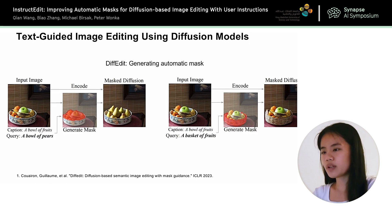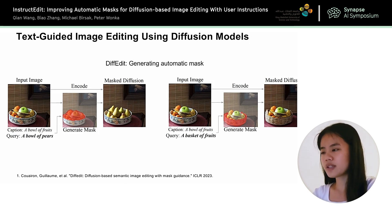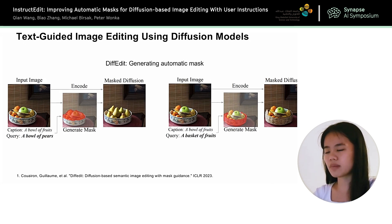If we want to give more controllability to the editing, we can add a mask into the editing pipeline. For the work DiffEdit, it can automatically generate a mask by subtracting the differences of the diffusion noises. So for the same input image, it can either generate a mask for the fruits or generate a mask for the ball.